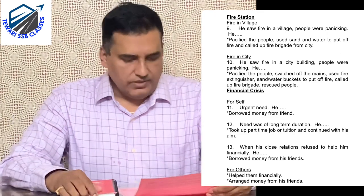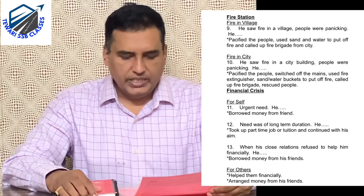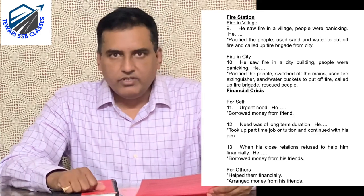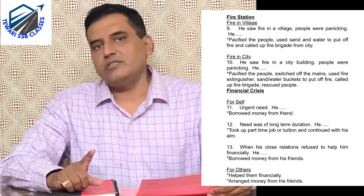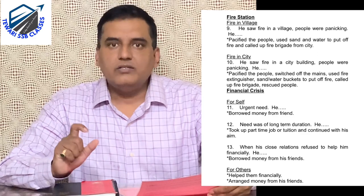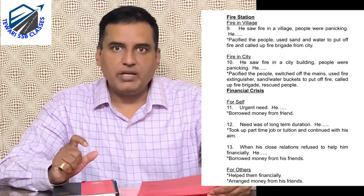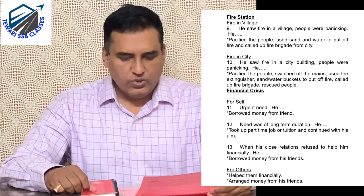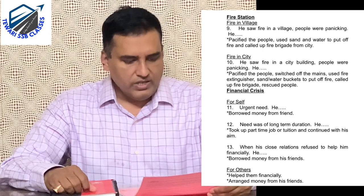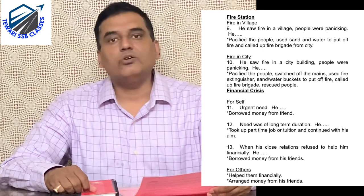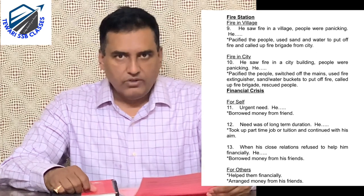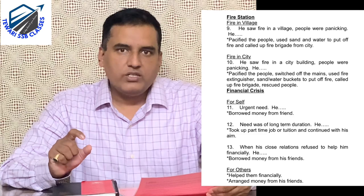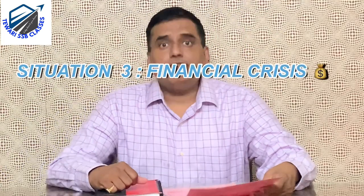If the fire is in the city - for example: he saw fire in a city building, people were panicking and some people were injured. The template answer: he pacified the people first, then switched off the electrical supply - that is the key difference between village and city scenarios, since electricity supply is present in the city. Then he sent the injured to the nearest hospital, used available means such as a fire extinguisher, and called the fire brigade immediately.